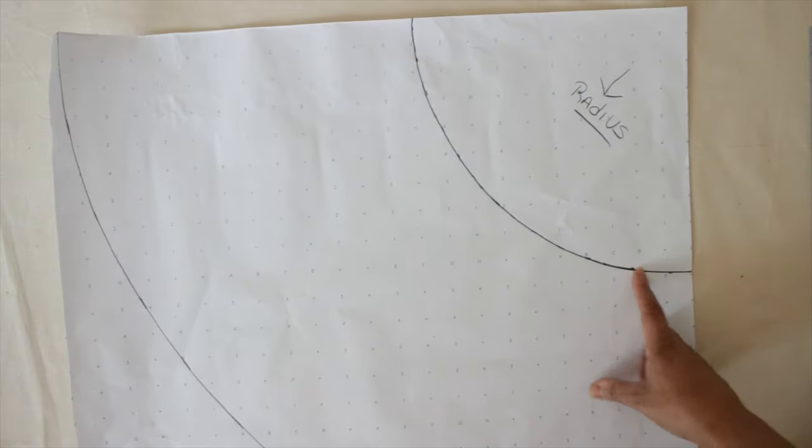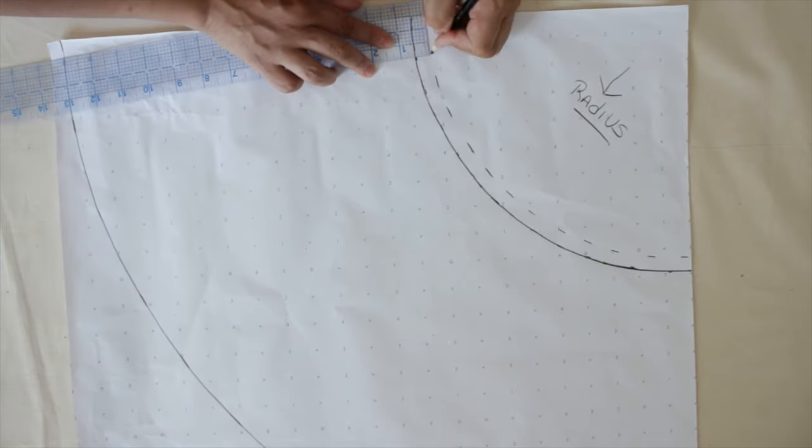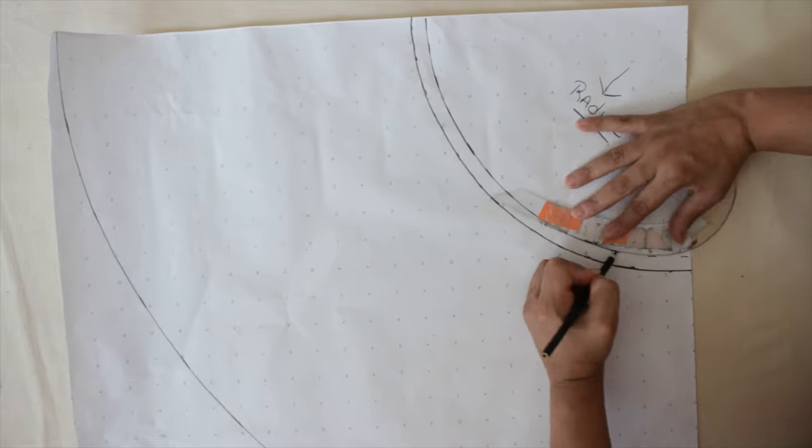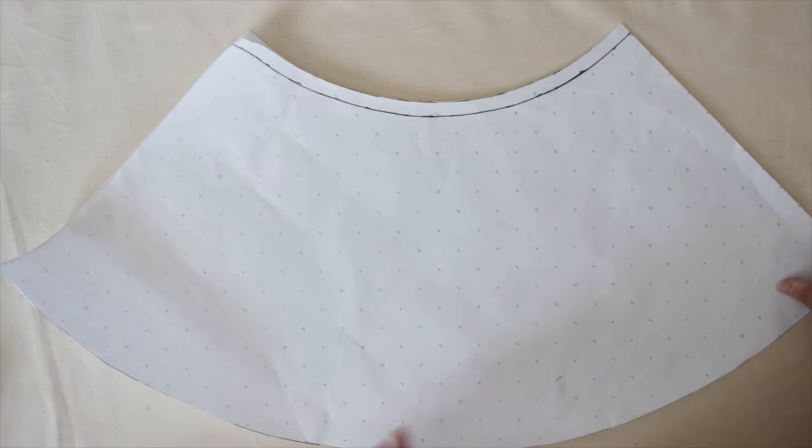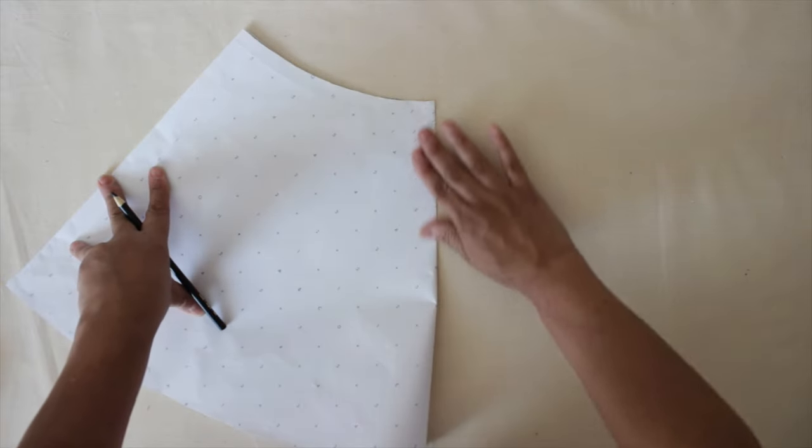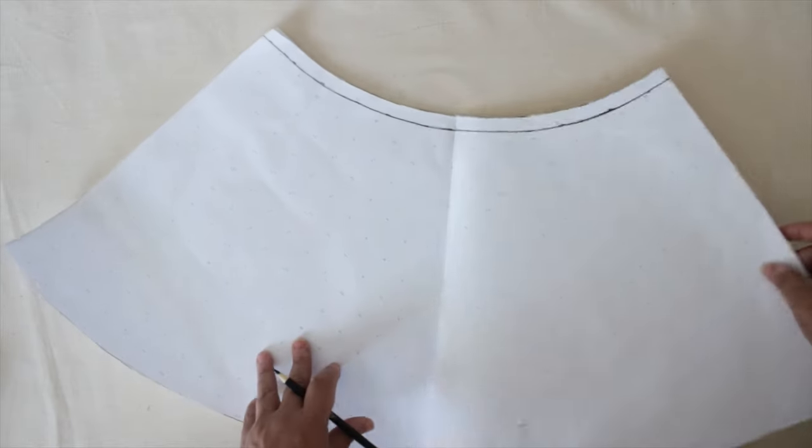Next, put your seam allowance on your waist. I'm putting mine's which is a half inch. Once you do that, you can clean it up with a curved ruler. Next, fold the paper once and make a crease, then open it up and make a line on all the creases.